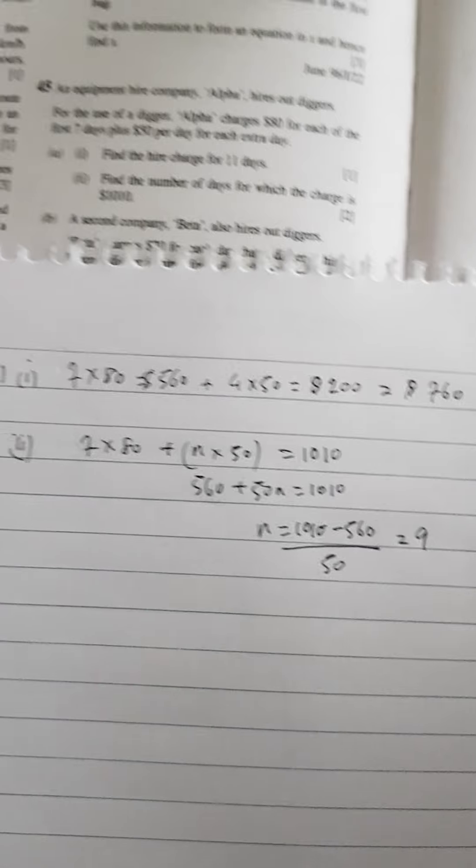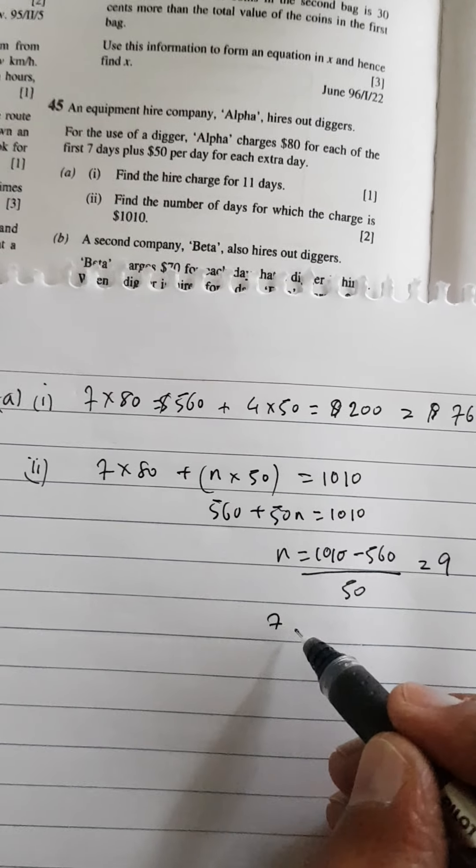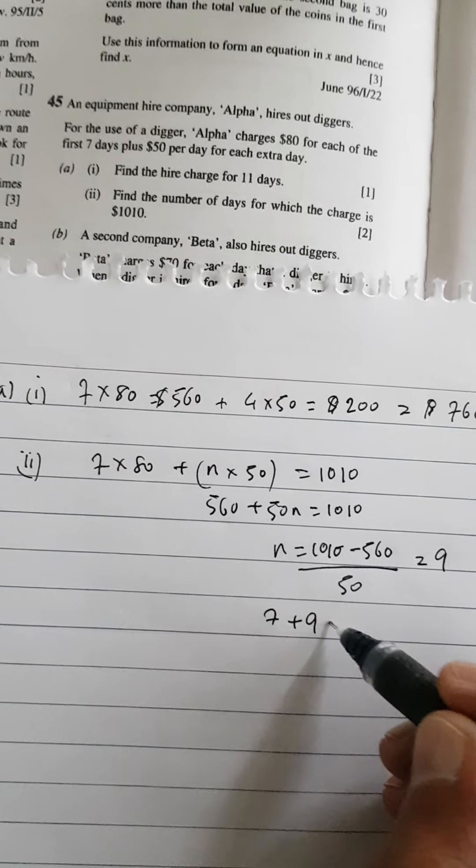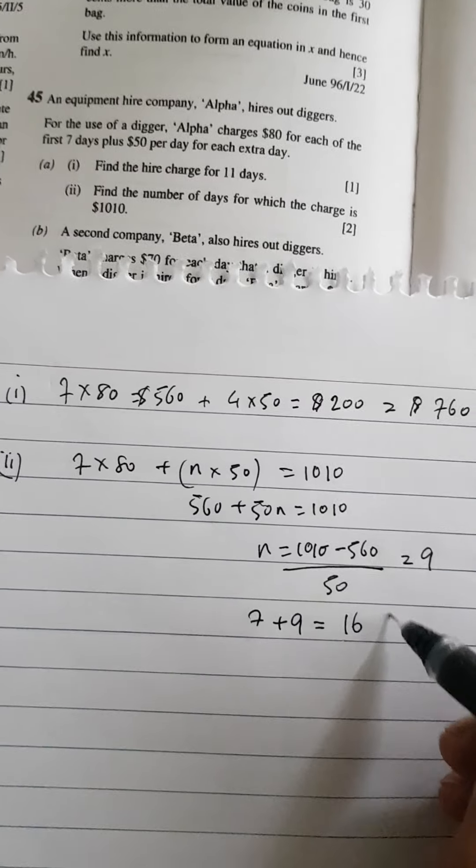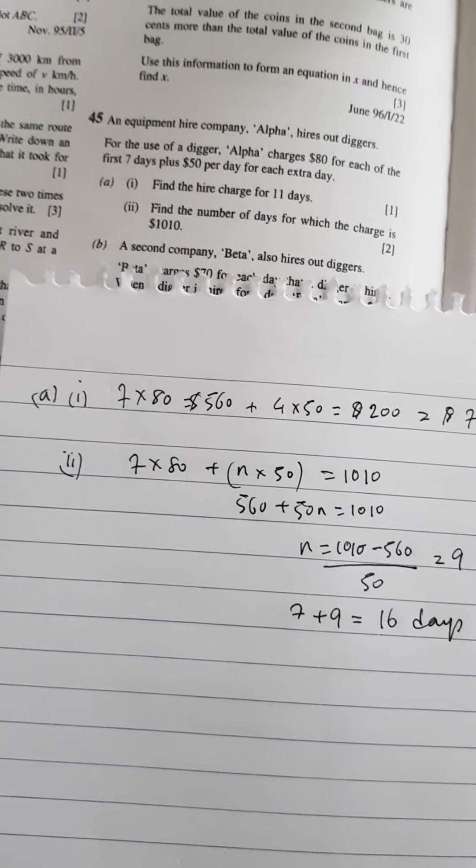So $1010 minus $560, divided by 50, you're going to get 9. So 9 days is the number of extra days. So the total number of days is then the 7 days that it was taken, plus the extra number of days, 9. So that makes it 16 days, for which the digger was hired.